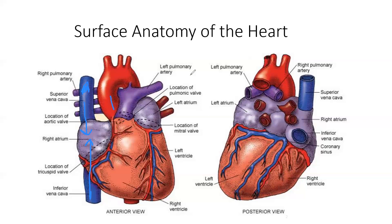The pulmonary arteries take the blood to the lungs area. Through the process of diffusion, we breathe off the carbon dioxide and we take in oxygen. Oxygen is then attached to the blood and it comes back via the pulmonary vein. The pulmonary vein has oxygenated blood.